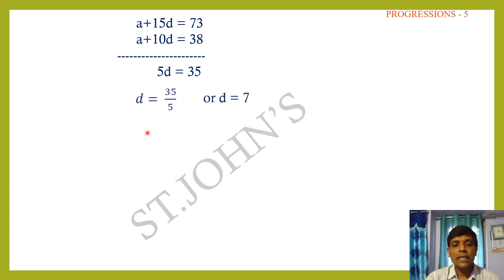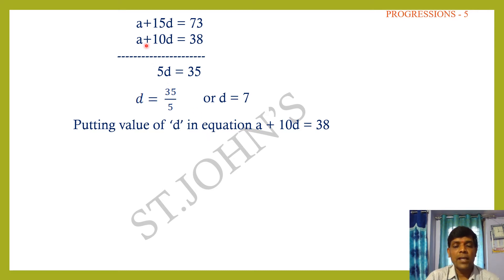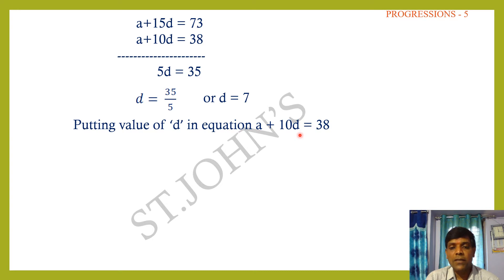Now putting the value of d = 7 into equation 1: a + 10d = 38, so a + 10×7 = 38, giving a + 70 = 38.